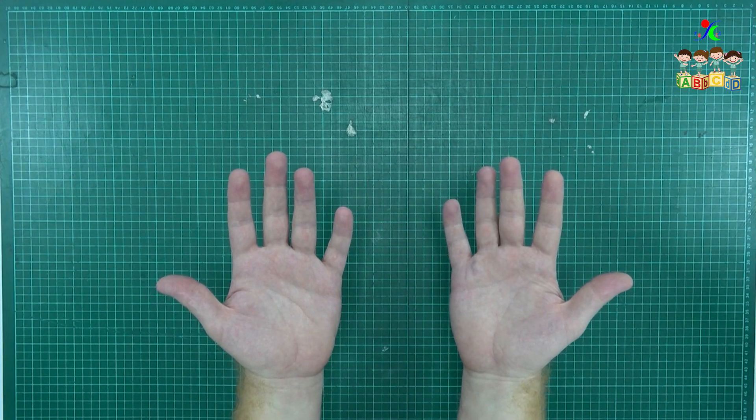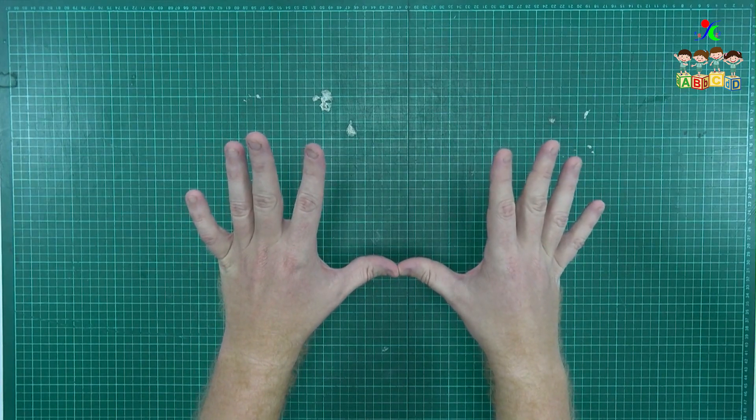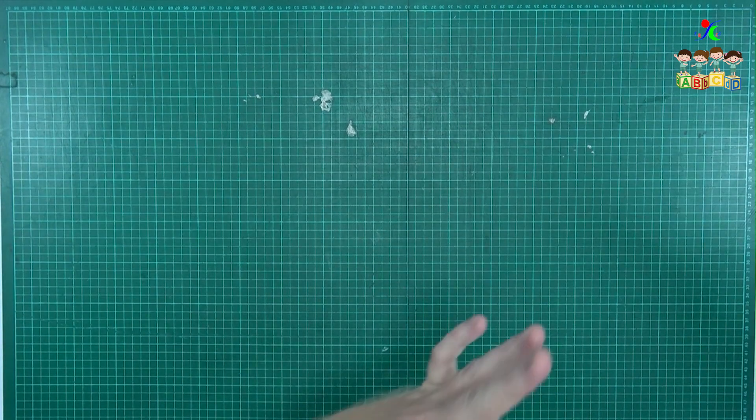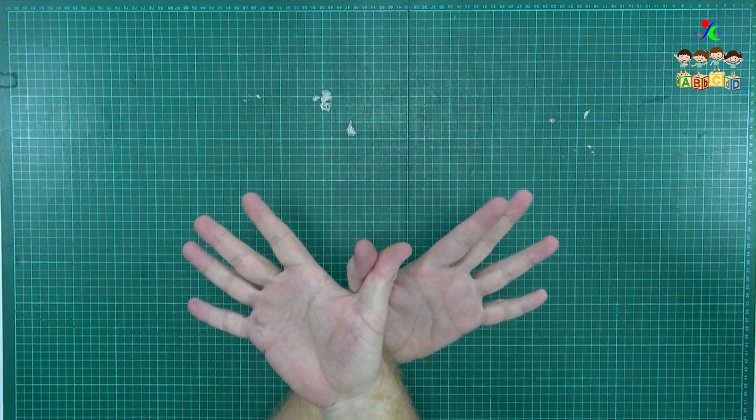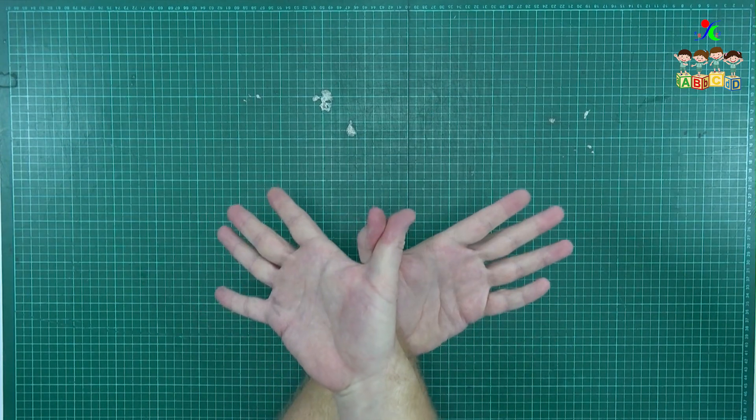To make a shadow bird, first touch your thumb to your thumb. Then twist your hands to link your thumbs. Finally, adjust your fingers to make your wings.